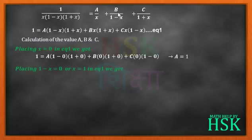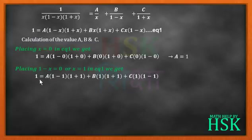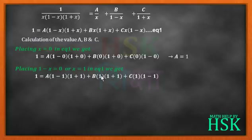Similarly, the fraction with B has denominator 1 minus x. Placing 1 minus x equal to 0, or x equal to 1, in equation number one: 1 equals A times 1 minus 1 into 1 plus 1, plus B times 1, plus C times 1 into 1 minus 1. These two terms become 0, giving 1 equals 2B, so B equals 1 upon 2.